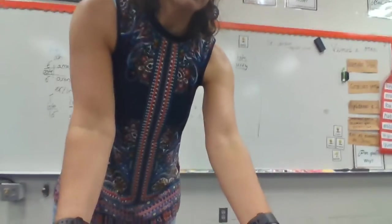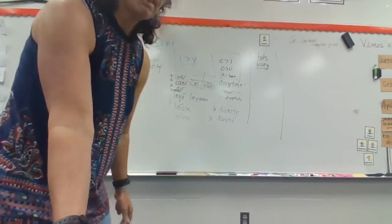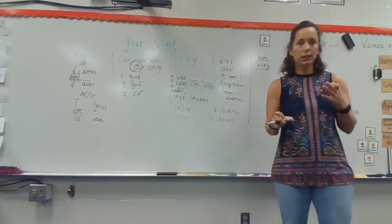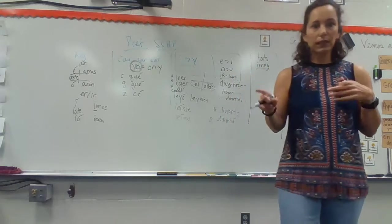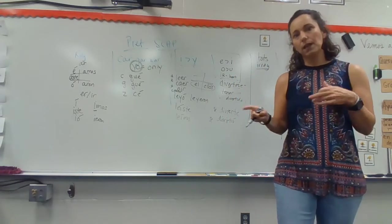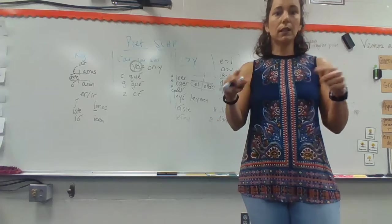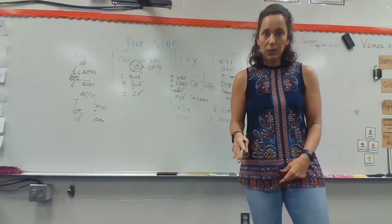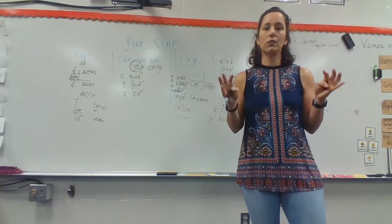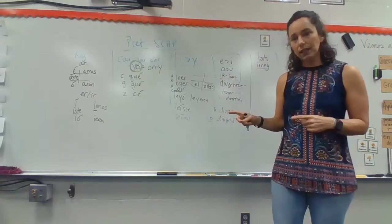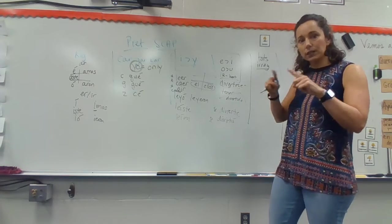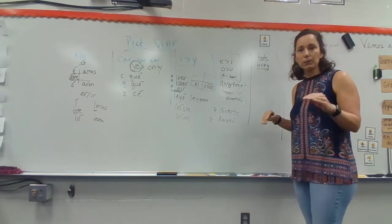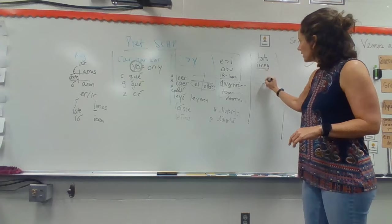The last part is our totes irregs. We sang a song. Tener es tuve. Estar es tuve. Ir es fui y también ser. Poner es puse. Poder es pude. Traje es para traer. Hacer hice. Haber uve. Saber supe querer quise. Decir dije. Venir vine. Ver y dar di no acentos. But your test did not prove that you learned anything from that song. So, the endings for these are different. Except dar di. Dar di, ver, and dar. They're their own thing. Vi, viste, vio, vimos, vieron.